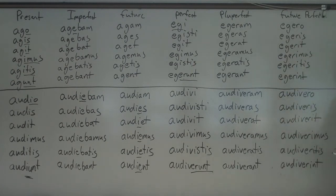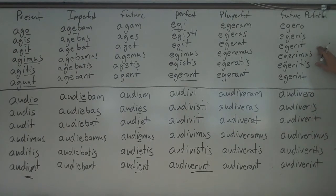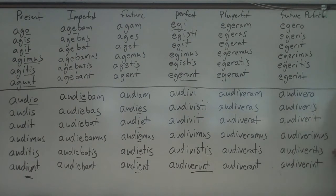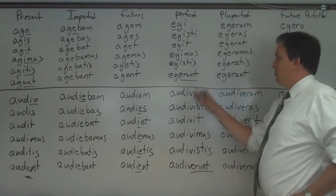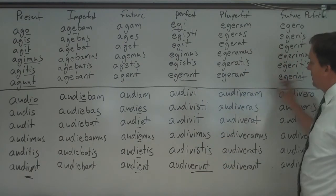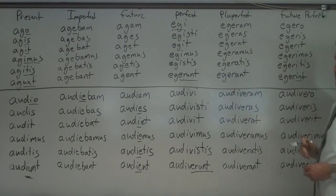The future perfect, which is of course very rare, uses the future 'ero' combined with the perfect stem: egero, egeris, egerit, egerimus, egeritis, egerint. And for audio: audivero, audiveris, audiverit — the -rint ending there. That is your future perfect, and sometimes people get confused between the pluperfect and the future perfect.